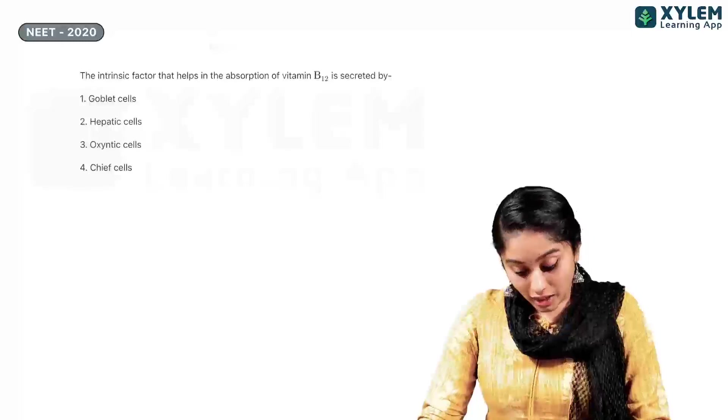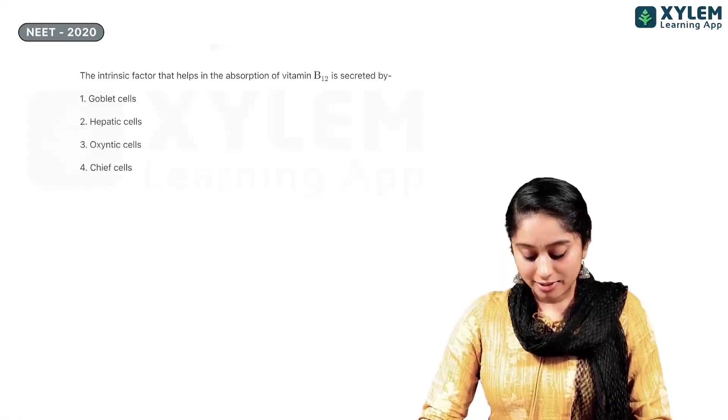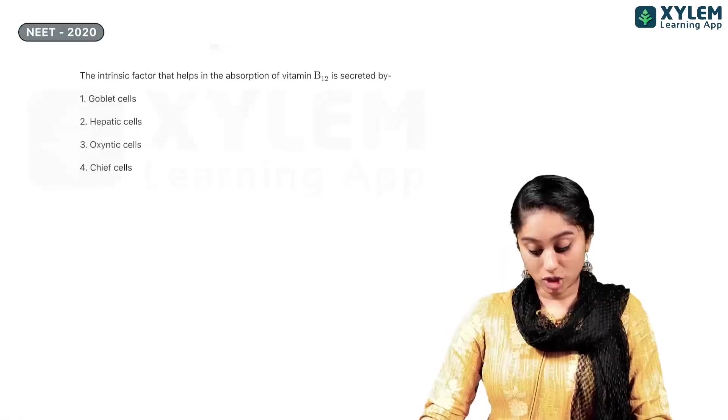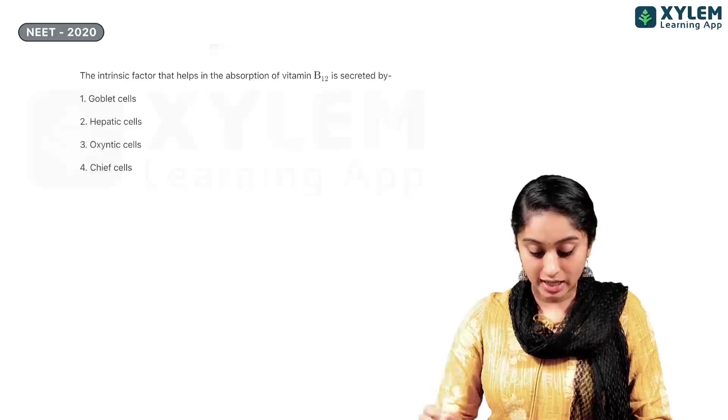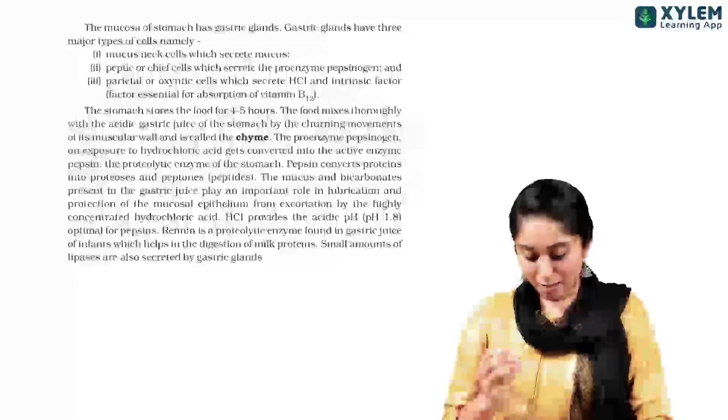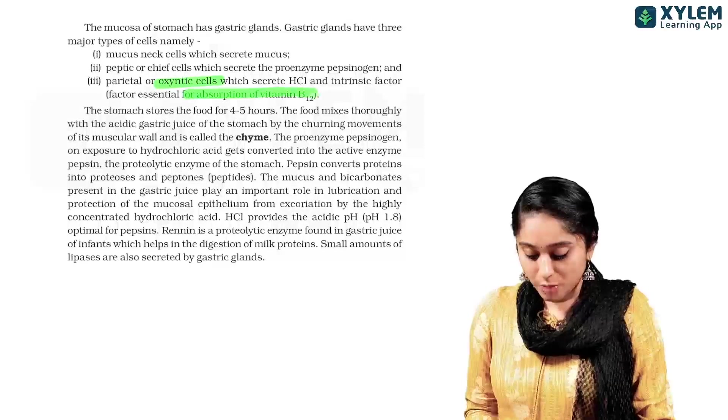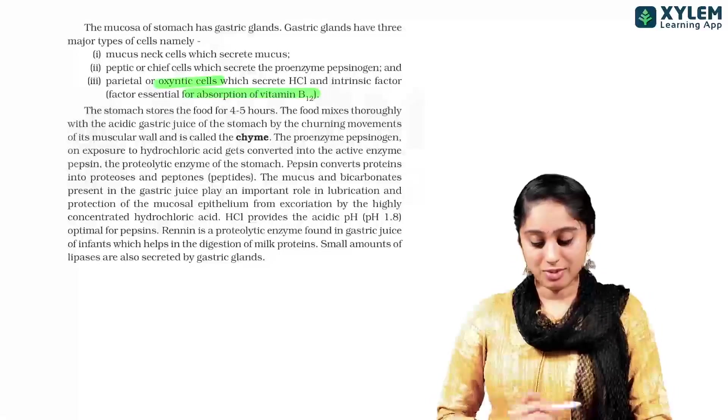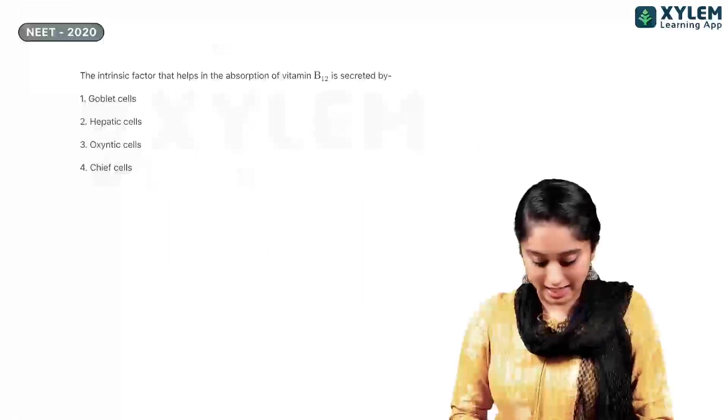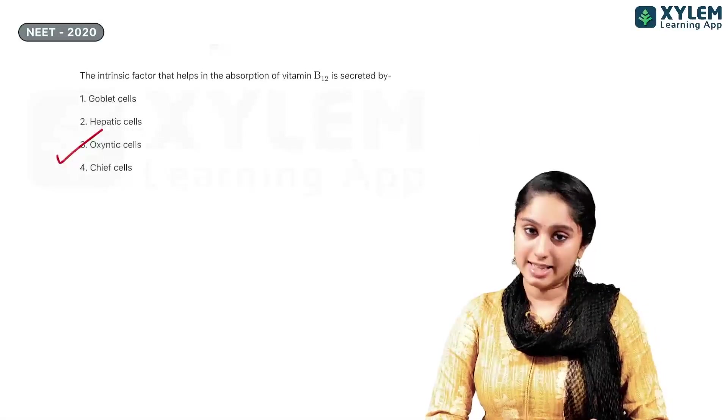Clear? Now, in 2020, the question is asked, the intrinsic factor that helps in the absorption of vitamin B12 is secreted by which cell? Again, we have oxyntic cells essential for absorption of vitamin B12. So, the answer here is clearly oxyntic cells.